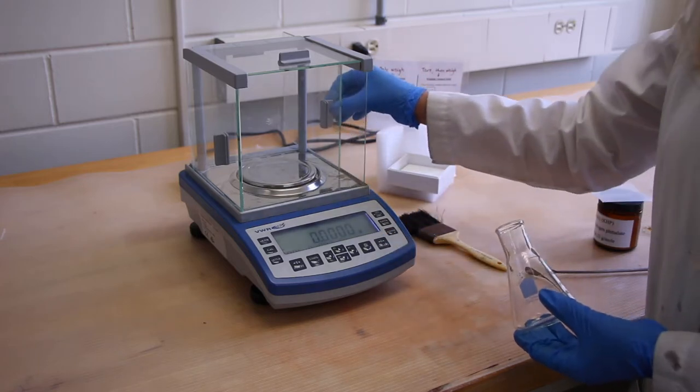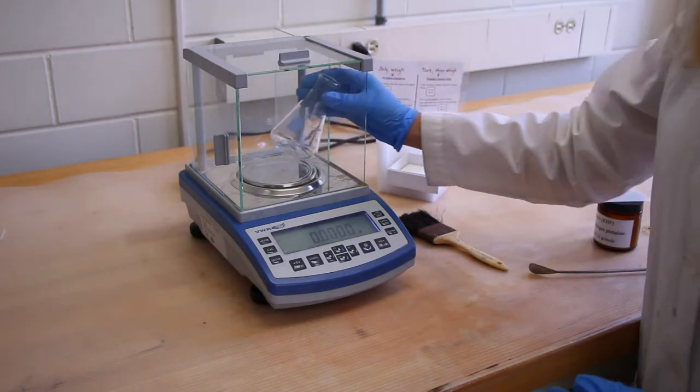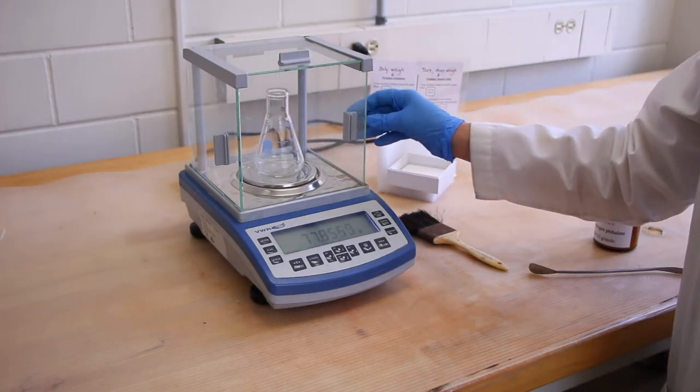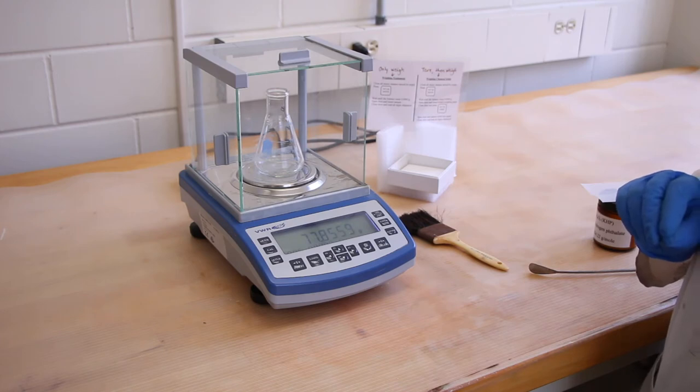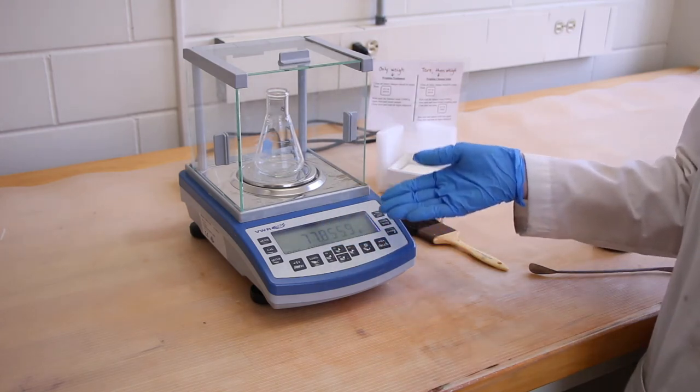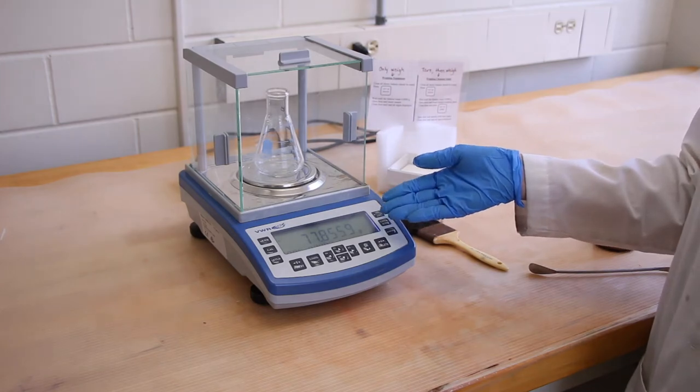Then we'll open up one of the doors, place our piece of equipment on the scale, and close the doors. And then we will read and record all the digits displayed on the balance.